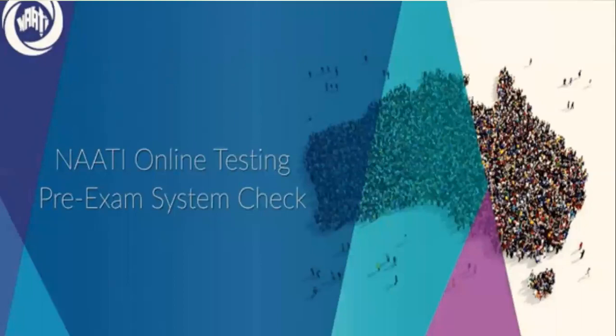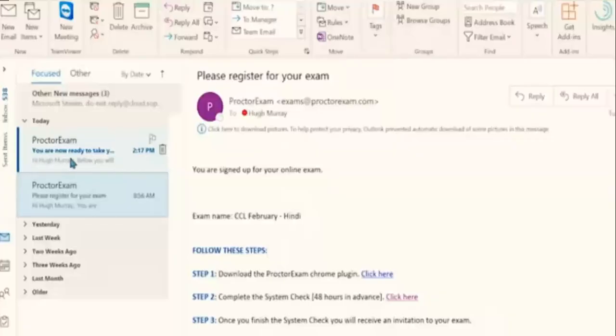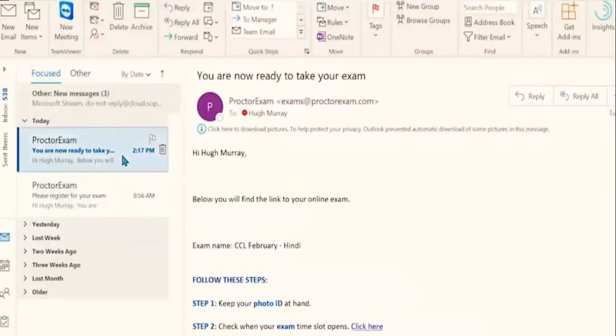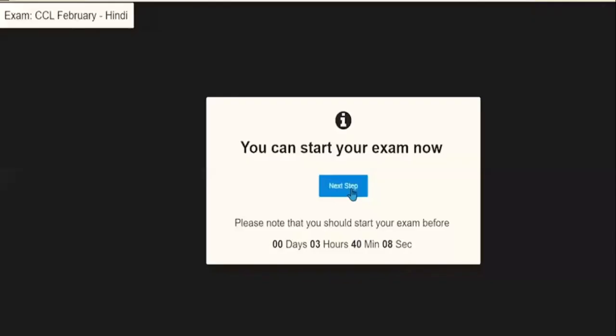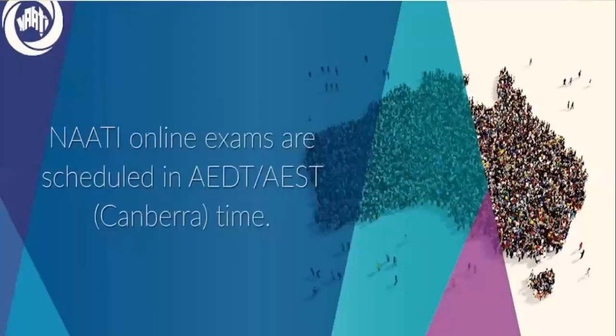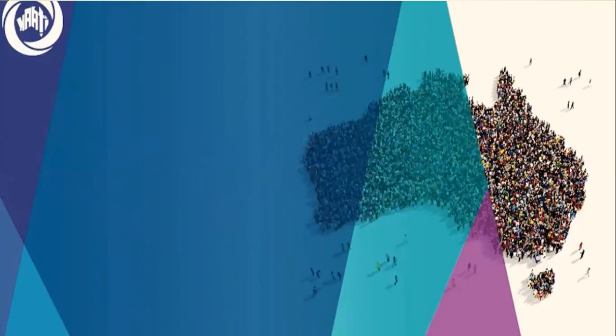So once the system check is done, as you have seen in the previous video 48 hours before the exam, you will receive another email for your exam. So click on the second link that you see on the screen and it will take you to the exam site. So note that all the tests are set in Canberra time. And it is important that you know three things before you start the exam.